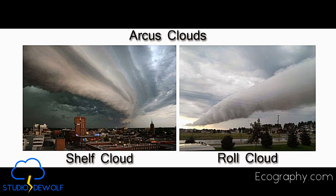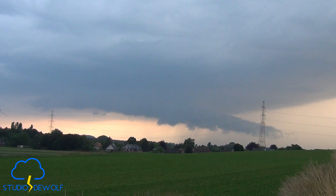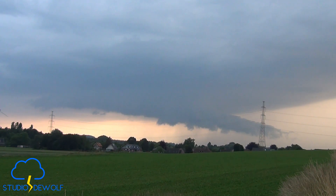A shelf cloud differs from a roll cloud because a roll cloud is completely detached from the base of the thunderstorm or other clouds. Roll clouds are relatively rare.